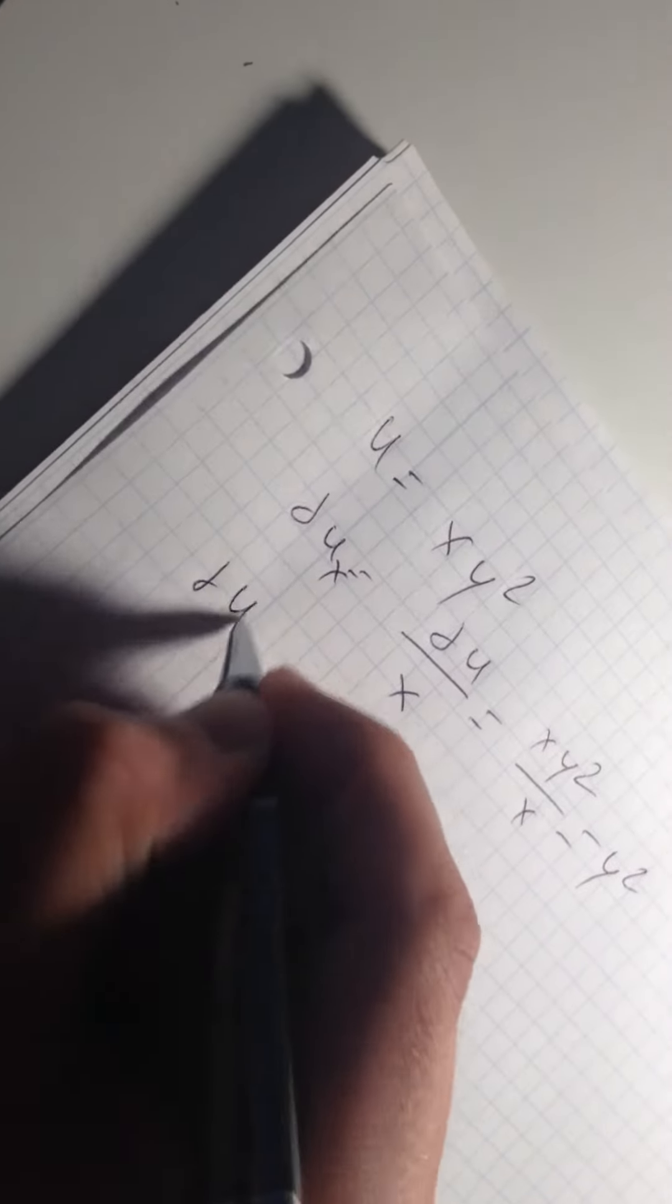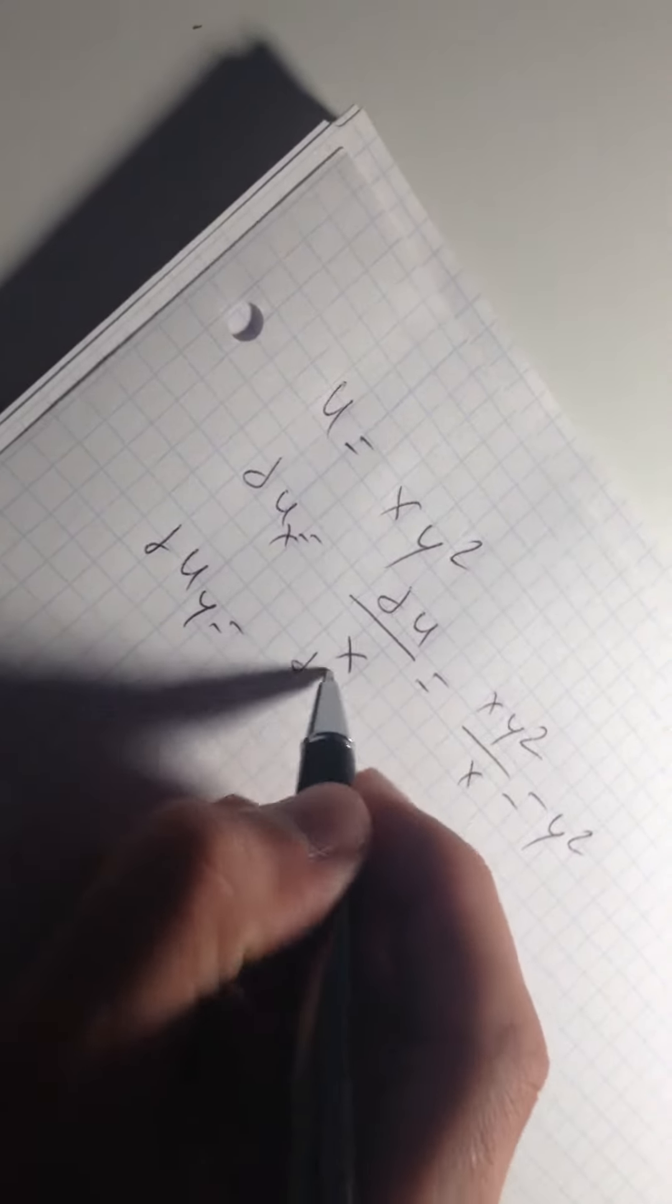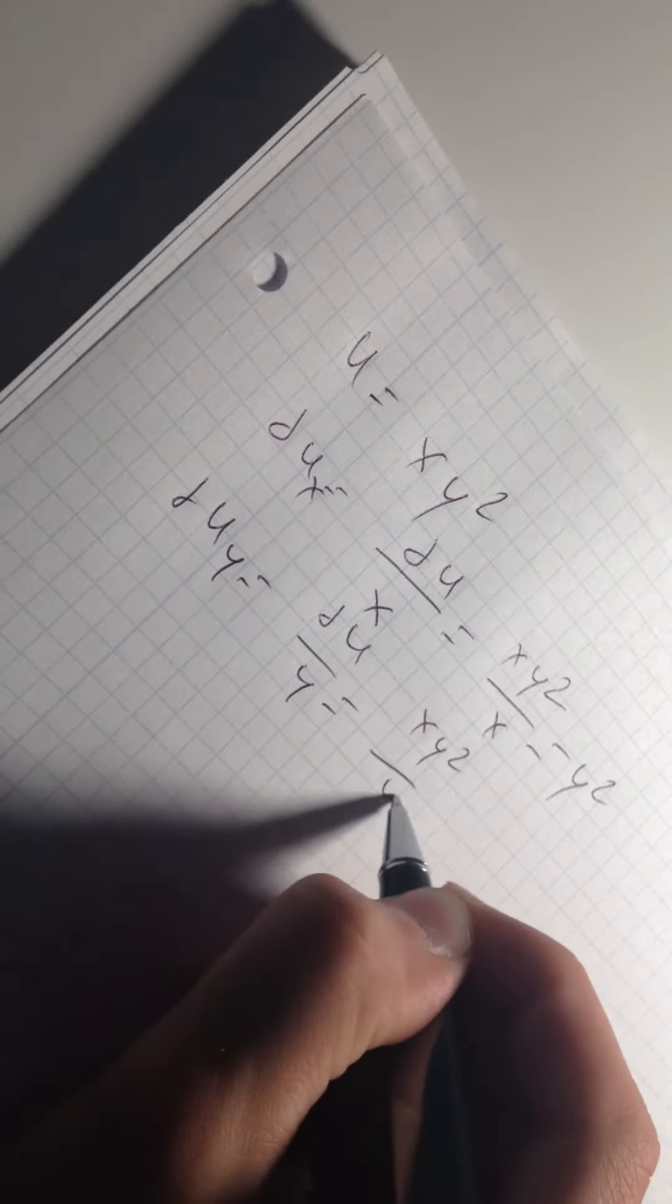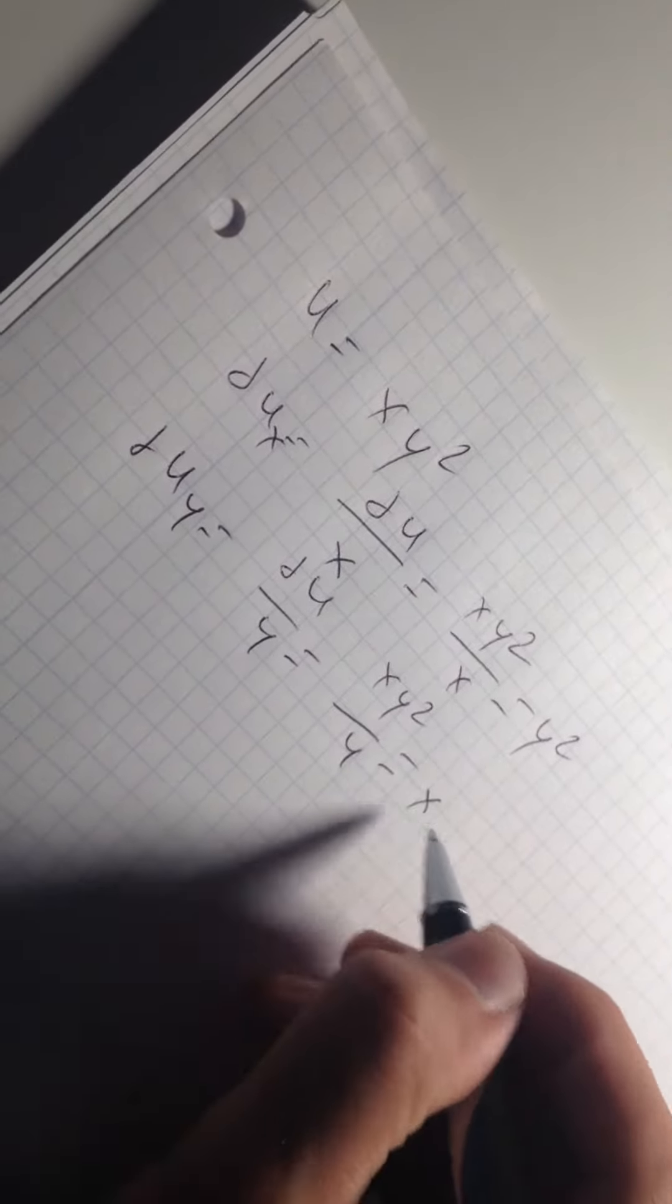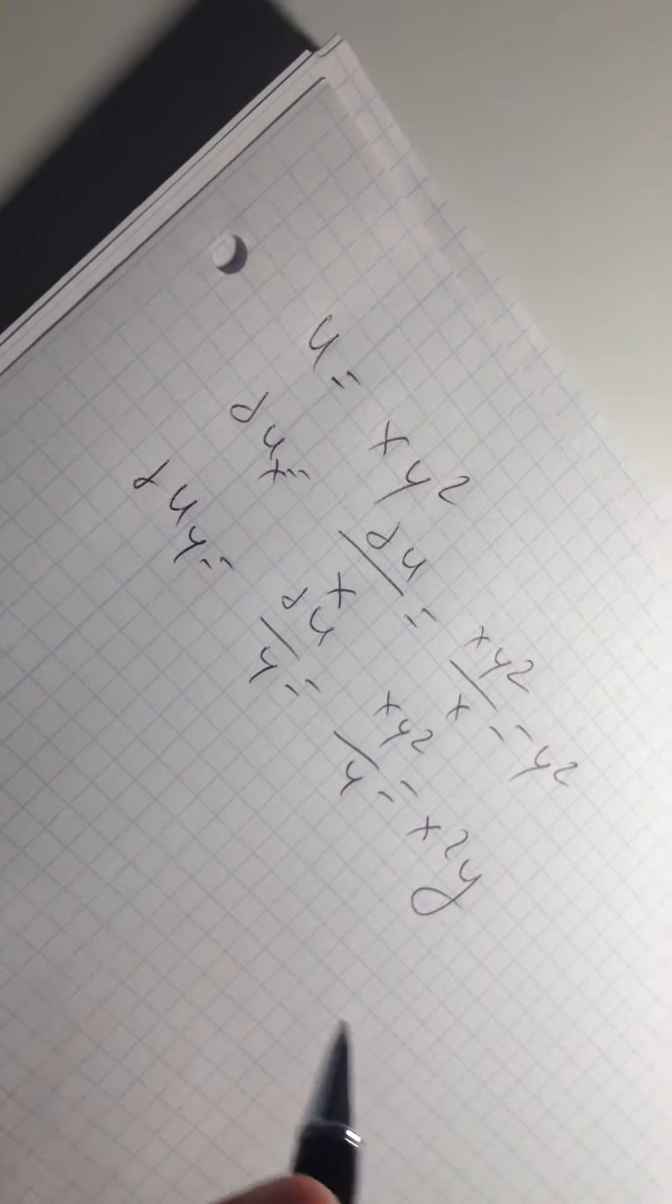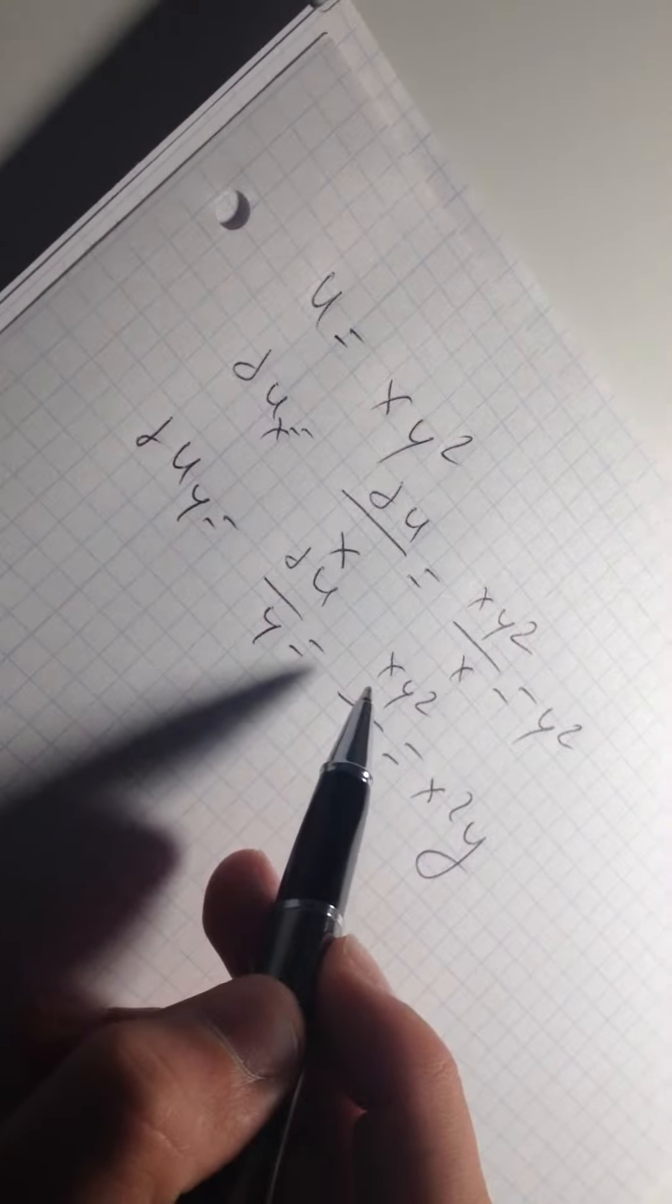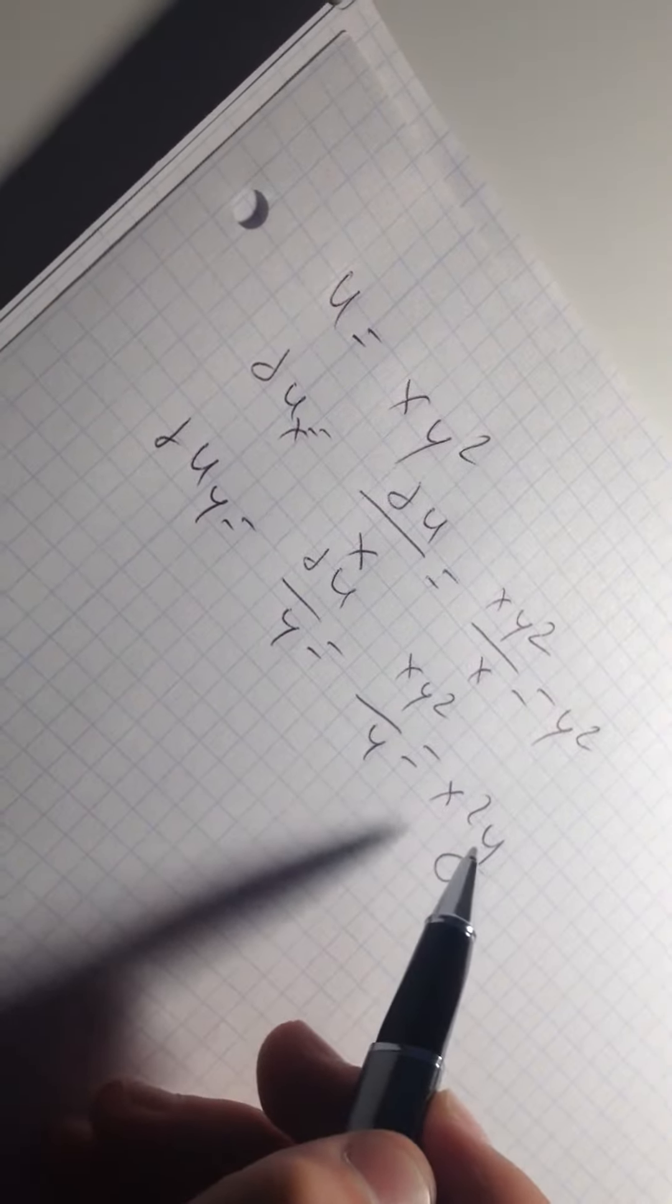Now I want to find also with respect to y. We do the same here. Now we have x times y, and because it's squared, 2 is going to the beginning, and that's why we still have y. So it's 2xy.